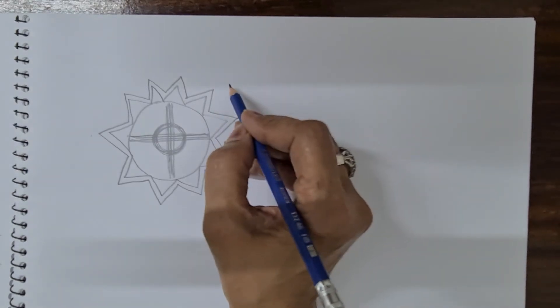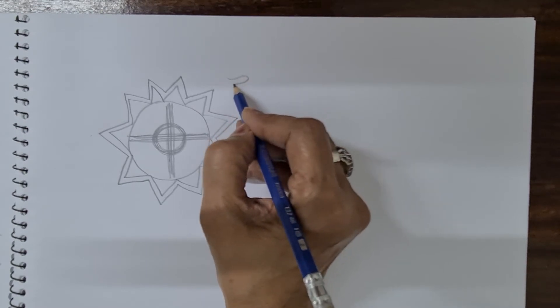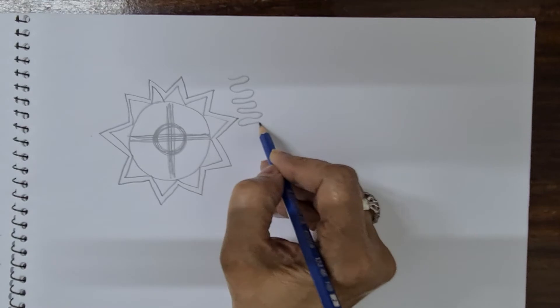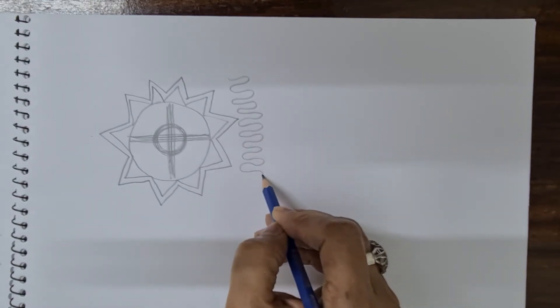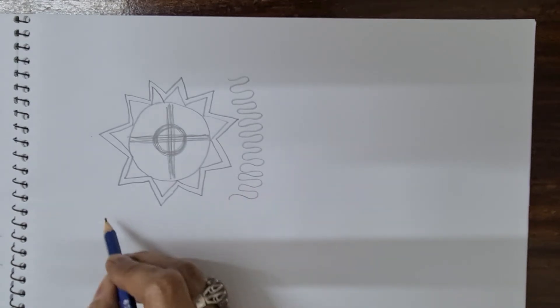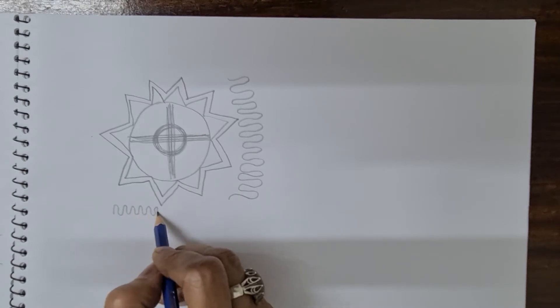After that is the wiggle line. The wiggle line, you just draw up and down wiggle line. I just quickly do it, then the small wiggle line with the hold of the pencil.